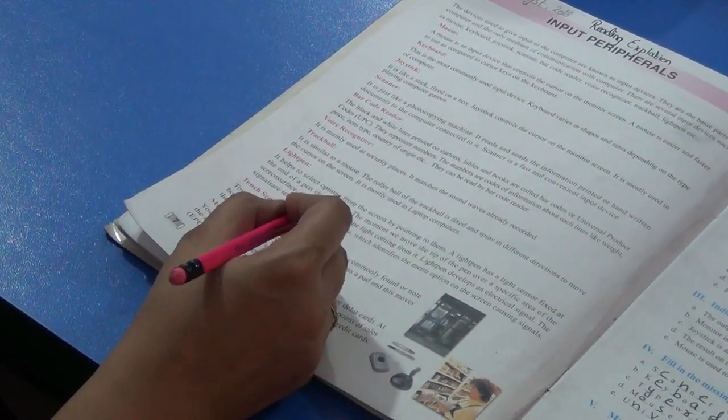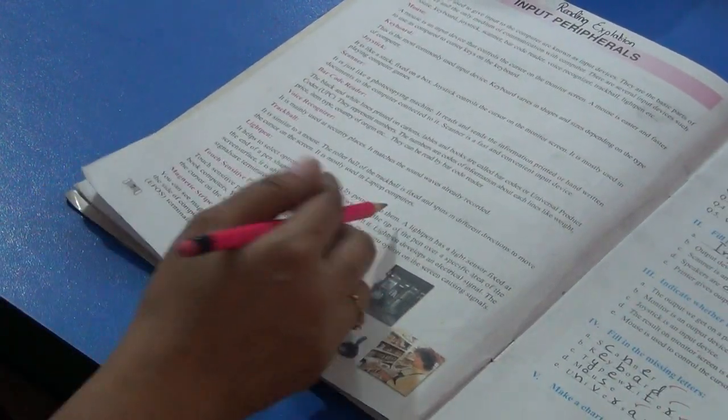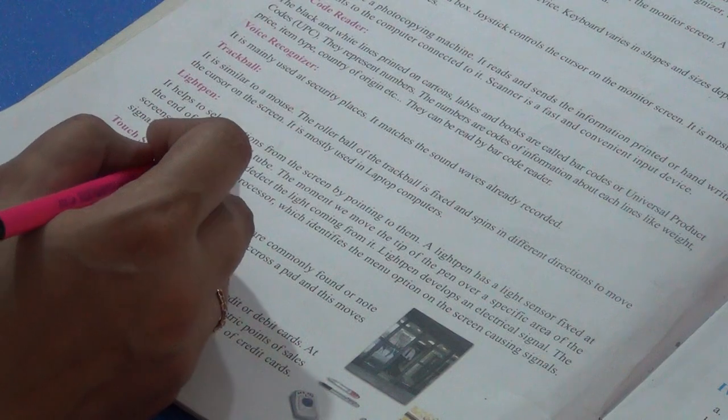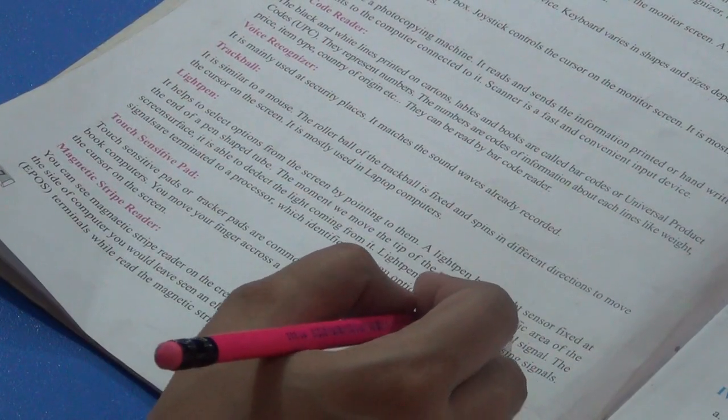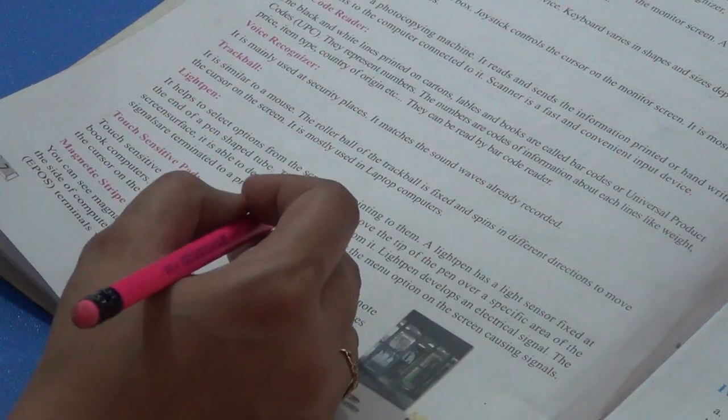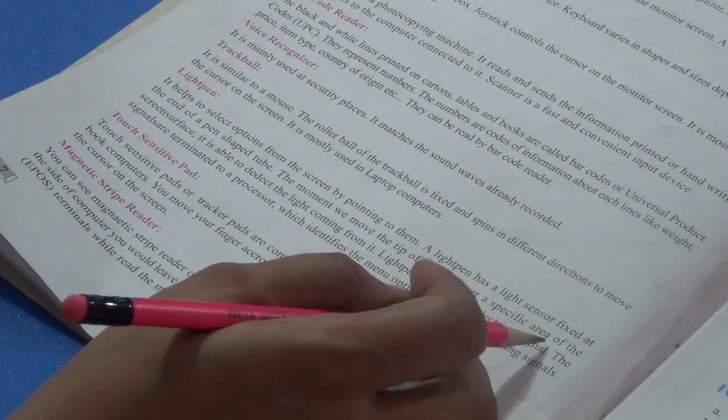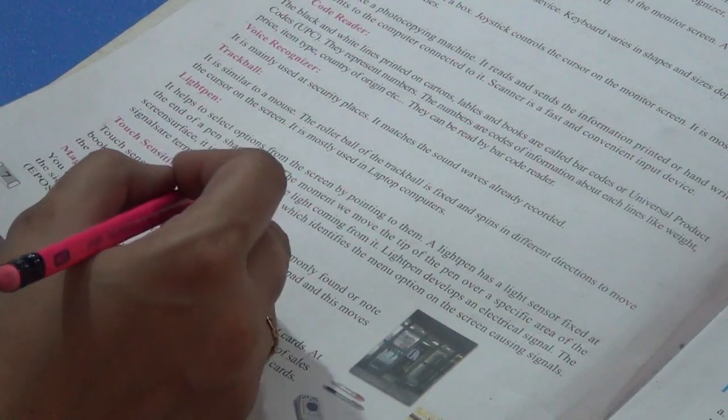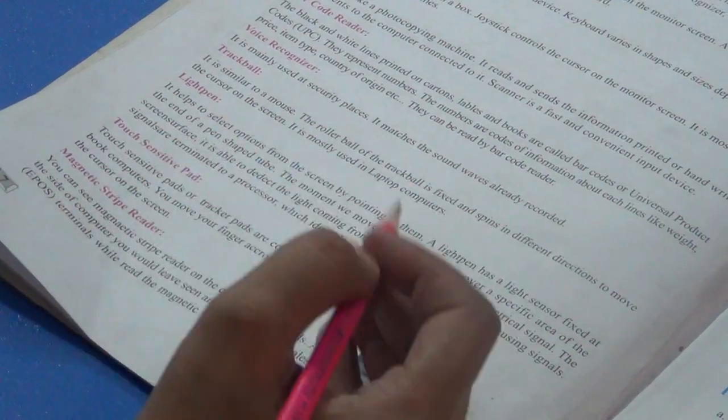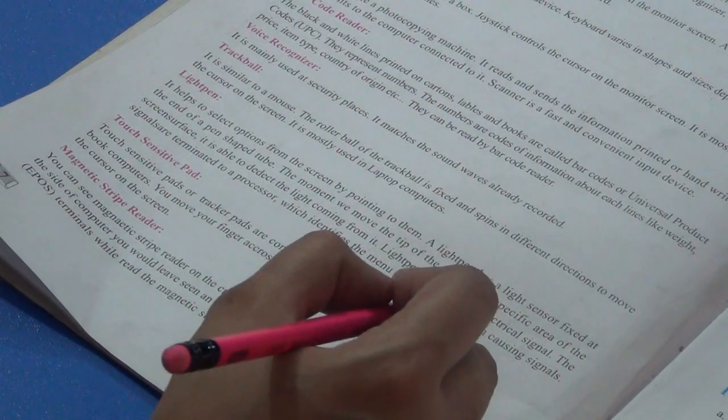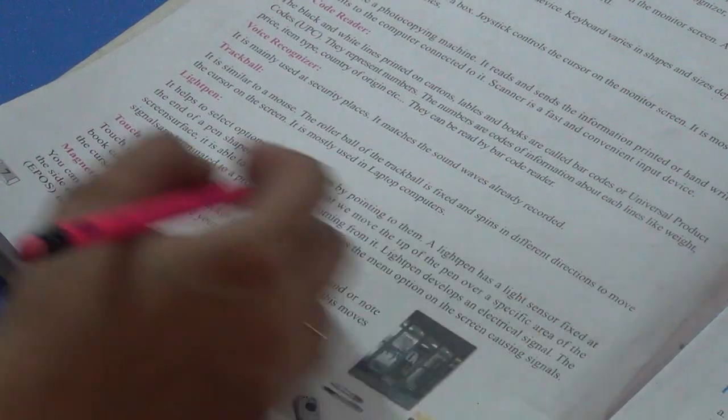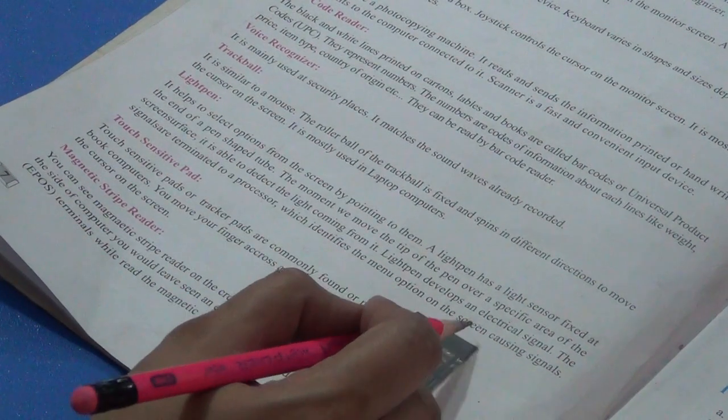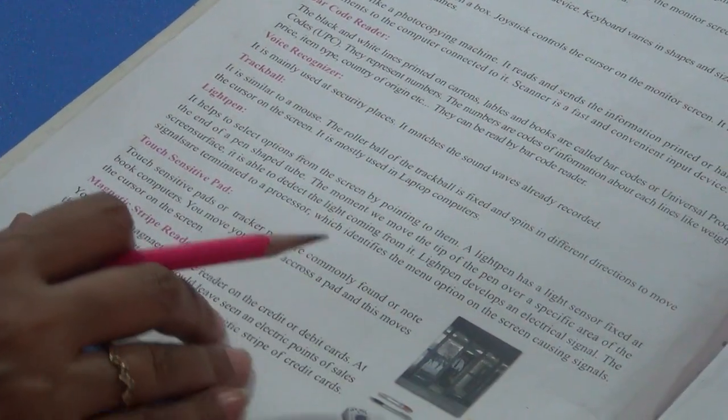Light pen. It helps to select options from the screen by pointing to them. With this pen you can select any option on the screen. A light pen has a light sensor fixed at the end of a pen-shaped light tube. The moment we move the tip of the pen over a specific area of the screen surface, electrical signals are developed. The signals are sent to a processor which identifies the menu option on the screen.